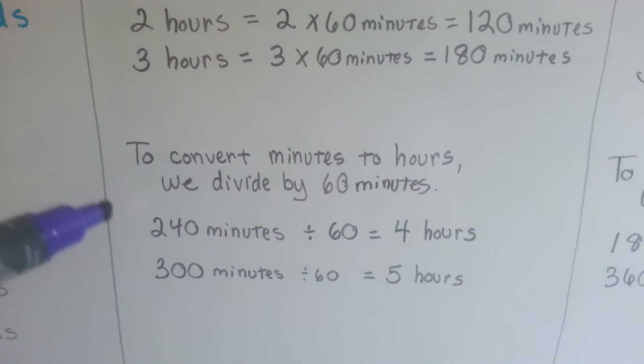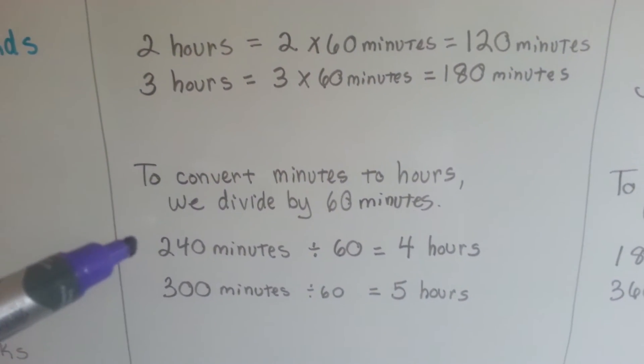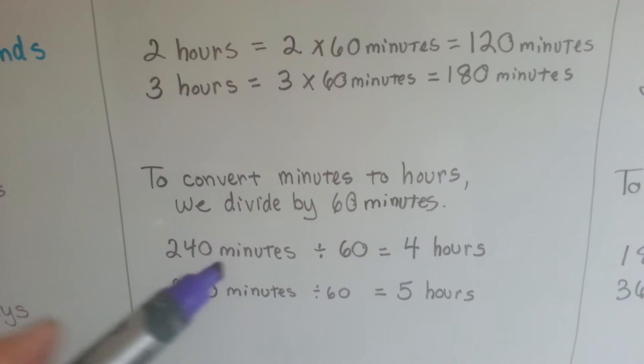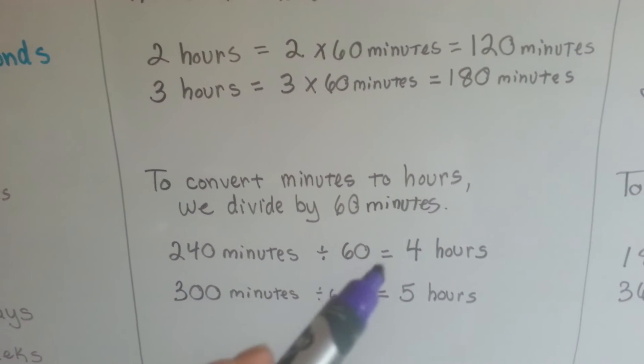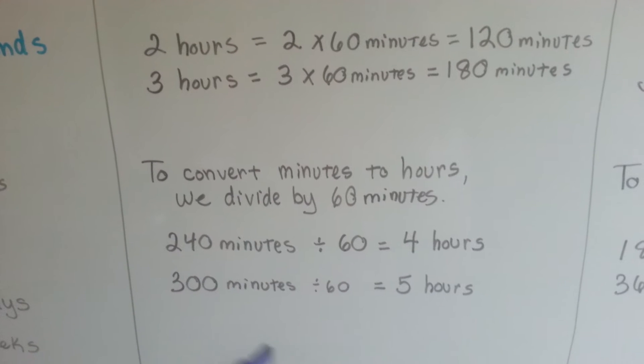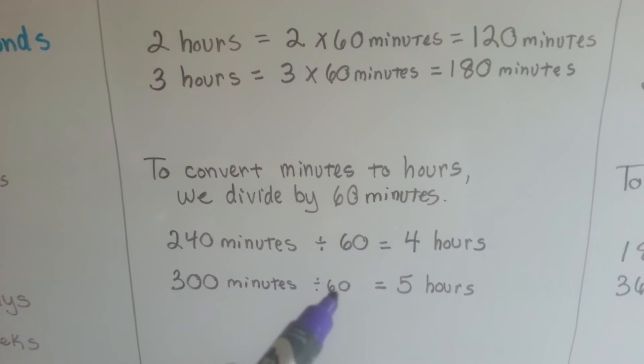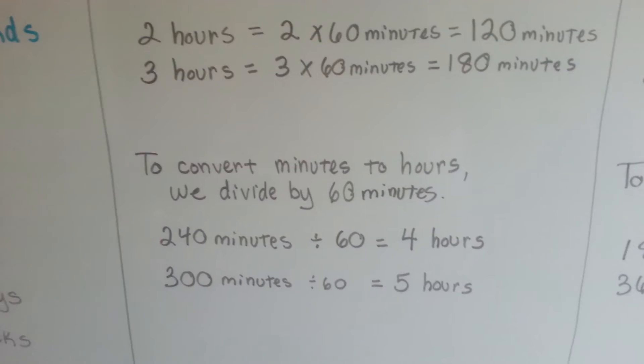We can convert minutes to hours too, the other way around. If you have 240 minutes, you divide them by 60, and that'll tell you it's 4 hours. If you have 300 minutes, you divide it by 60, and that'll tell you you have 5 hours.